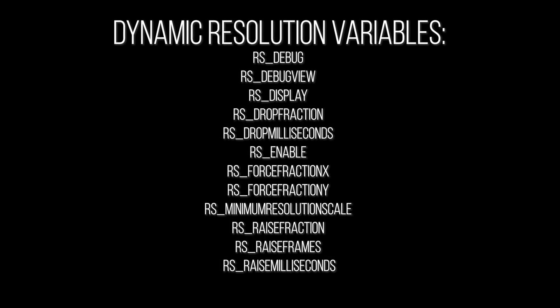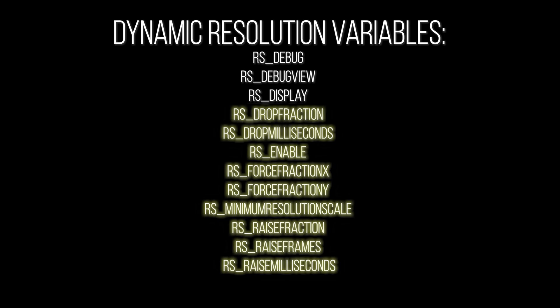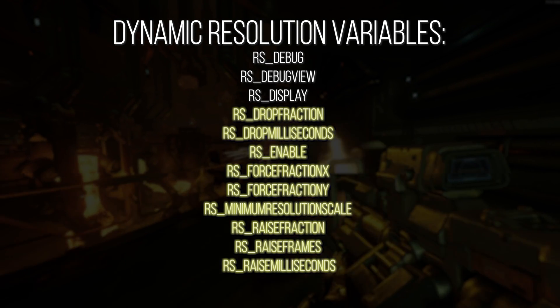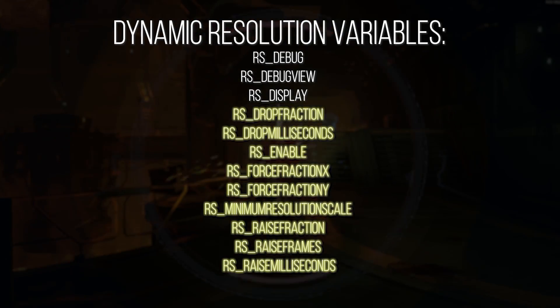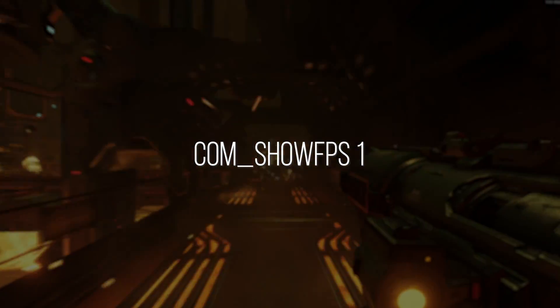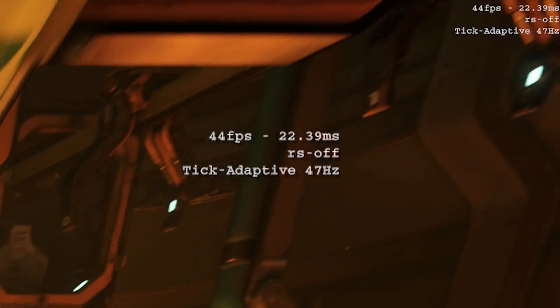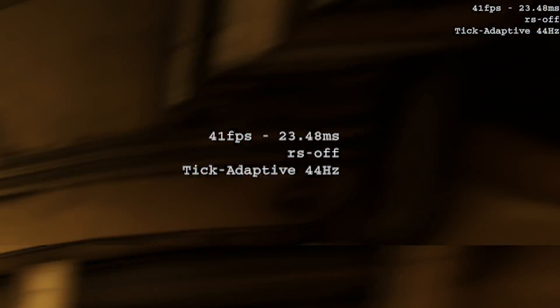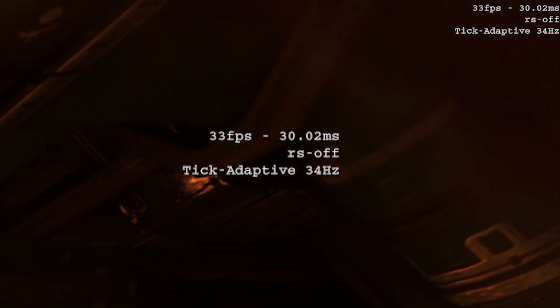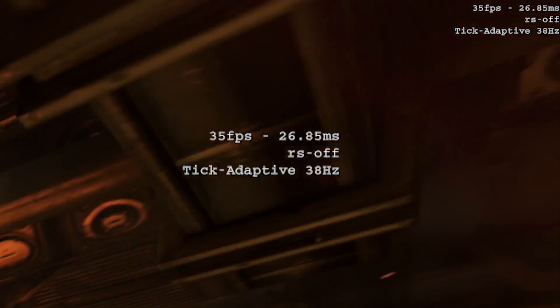There are 13 variables controlling dynamic resolution, and we're interested in a specific few — they all start with RS underscore. But before we dip into those, let us turn on com_show_fps and set that to 1. This will show the game's tick rate, the current FPS, but importantly the status of the game's internal resolution. By default it will show RS off, meaning dynamic resolution scaling is off.